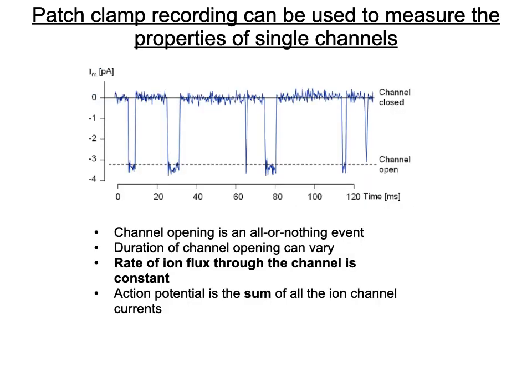Patch clamp recordings show changes in amplitude to determine whether a channel is open or closed and the frequency of opening and closing. At zero, the channel is closed. A negative amplitude flux represents ions moving through — the channel is open. Looking at the recording, we can visualize the channel cycling: closed, open, closed, open, closed, open.